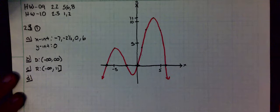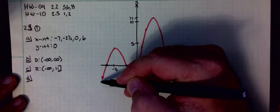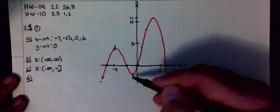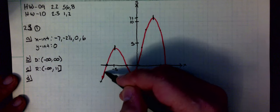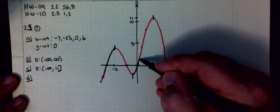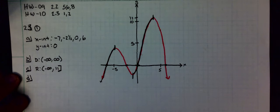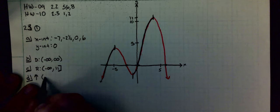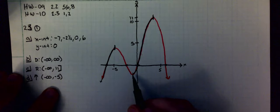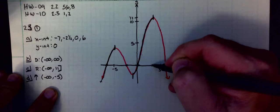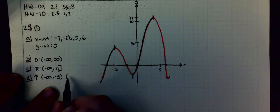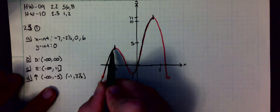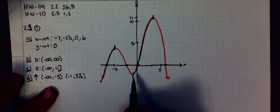Part D wants intervals when it's going uphill. Going uphill from here all the way to here, uphill in these two regions. So increasing: negative infinity to negative 5, and from negative 1 up until like 3. Round brackets on all of those because at the top it's not increasing or decreasing, it's constant. At the bottom, put a union.